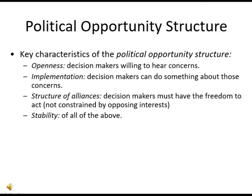Then there's the structure of alliances, meaning decision makers must have the freedom to act. For example, some states really limit what local governments can do, while other states — New York for example — really empower local governments to have a great deal of autonomy. Finally, stability is another key characteristic, and that's going to be related to all three of the other criteria: openness, implementation, and structure of alliances.